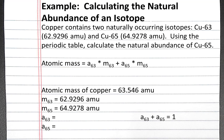So we can solve for the natural abundance of 63 to put it in terms of the natural abundance of 65. So the natural abundance of 63 is 1 minus the natural abundance of 65.